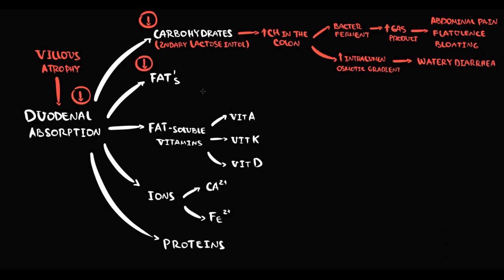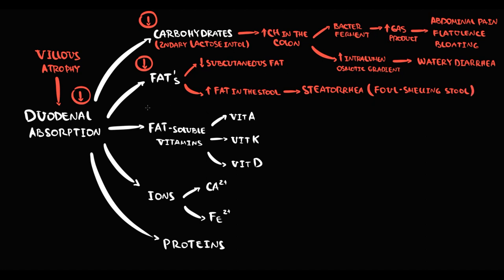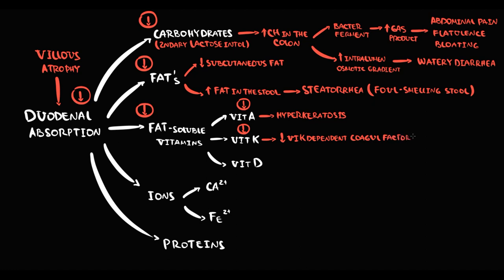Decreased fat absorption causes reduced subcutaneous fat and an increased amount of unabsorbed fats in the stool — a condition called steatorrhea. With villus atrophy, fat-soluble vitamin absorption also decreases. Decreased vitamin A absorption leads to vitamin A deficiency, most commonly manifesting as hyperkeratosis. Decreased vitamin K absorption leads to vitamin K deficiency, impairing production of vitamin K-dependent coagulation factors, which disrupts secondary hemostasis and manifests as easy bruising.